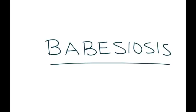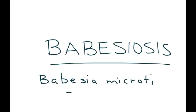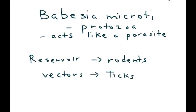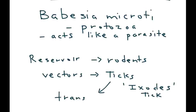Babesiosis is the topic. This is a condition caused by Babesia microti, which is a protozoa that acts like a parasite. The reservoir for Babesia are rodents, and the vector are ticks — in particular a tick known as Ixodes, and it is this tick that transmits the Babesia to humans.